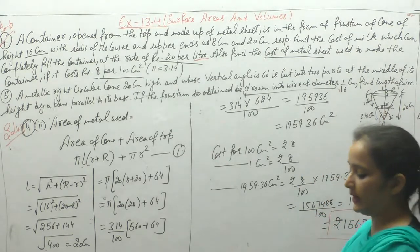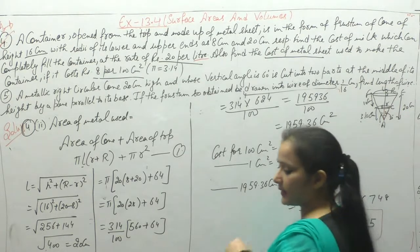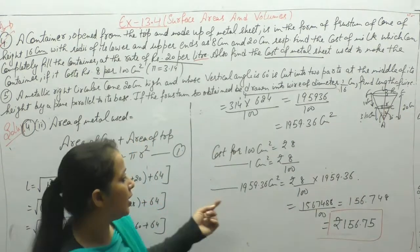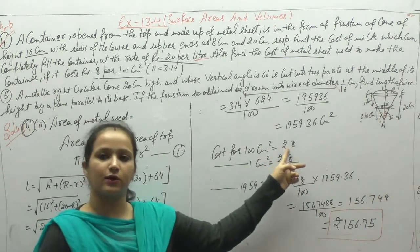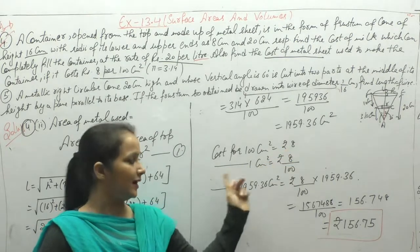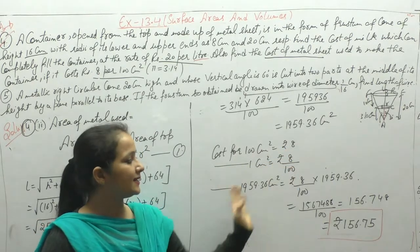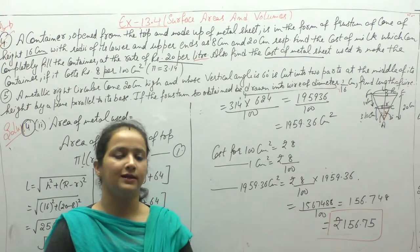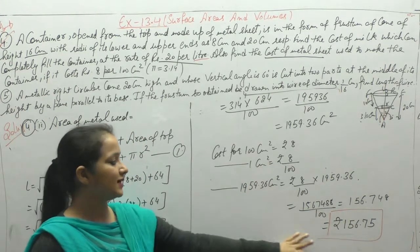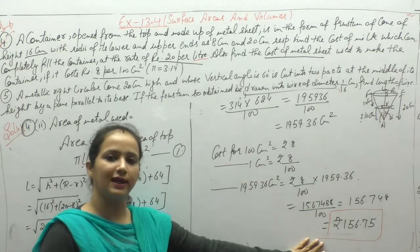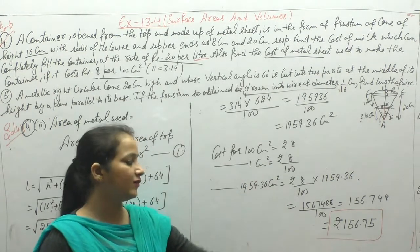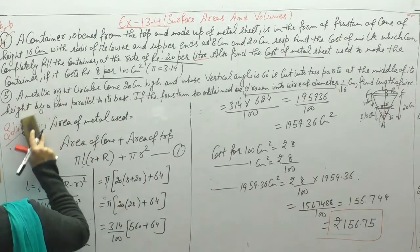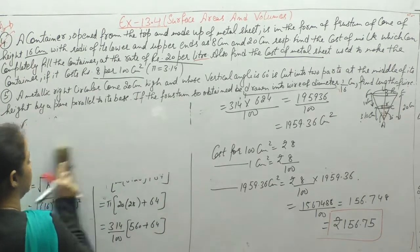So first we found the area of metal used, then since 100 cm² costs ₹8, we found the cost for 1 cm² and then for the total area. The cost for making the container with the metal used is ₹156.75. Now next, question number 5.